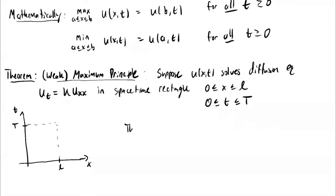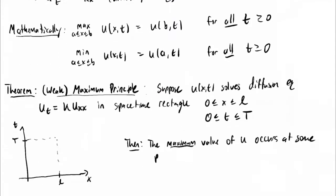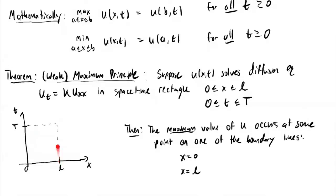The maximum principle says the largest possible value of the solution occurs at some point on one of three of the boundary lines: either x is equal to zero, x is equal to L, or initially when t is equal to zero. So this is very similar to the example we were just looking at. When the heat source is on the left side, or the right side, or maybe you heat up the whole rod and cut off the heat source at time zero and it cools off — that's why you have to allow for that case.